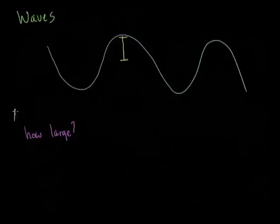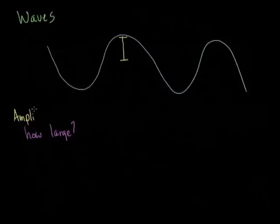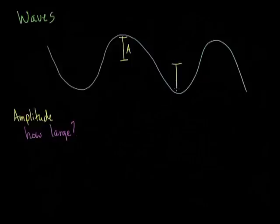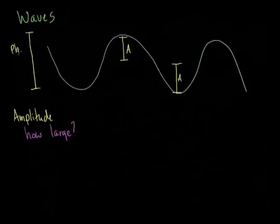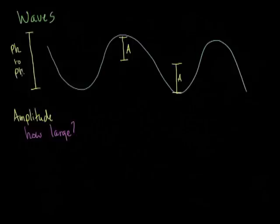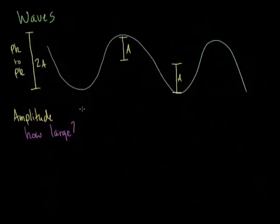That's called the amplitude in wave terminology. Let's say the amplitude is A. The difference between the peak and the trough, called the peak-to-peak distance, equals 2A. So amplitude is a very intuitive concept for characterizing how big a wave is.